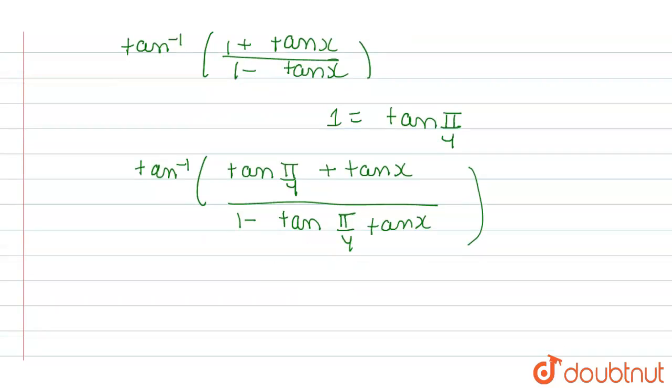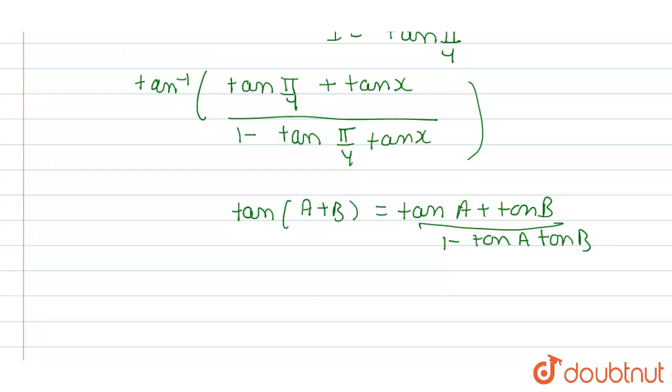Now, in bracket, we get formula of tan of A plus B, which is equal to tan of A plus tan of B divided by 1 minus tan A tan B. This is formula of tan A plus B. So it is becoming in a formula.